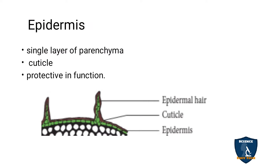To summarize the epidermis: it is a single layer of parenchyma cells. On top of the epidermis you can see the cuticle, which protects it. Epidermal hairs arise from the epidermis. The function of the epidermis is to give protection to the inner tissues.